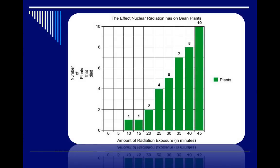Let's examine this graph for independent versus dependent variable. Now first of all this is a bar graph which is okay we can still do it. And the title of the graph here is the effect nuclear radiation has on bean plants.